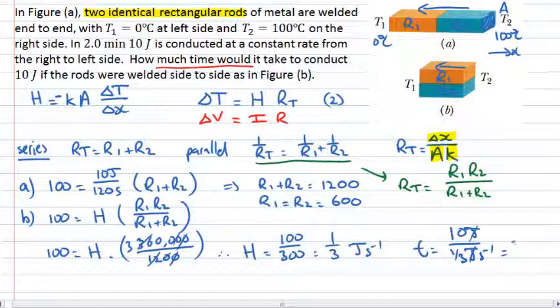So previously it took two minutes. This is four times faster. So we have four times faster heat flow in the composite system. When it's parallel, R parallel must be one quarter of R series.